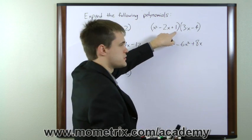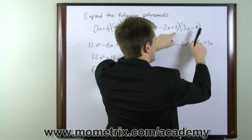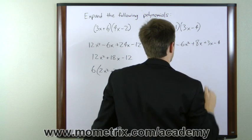Moving on to the third term here. 1 times 3x is 3x. And 1 times negative 4 is negative 4.